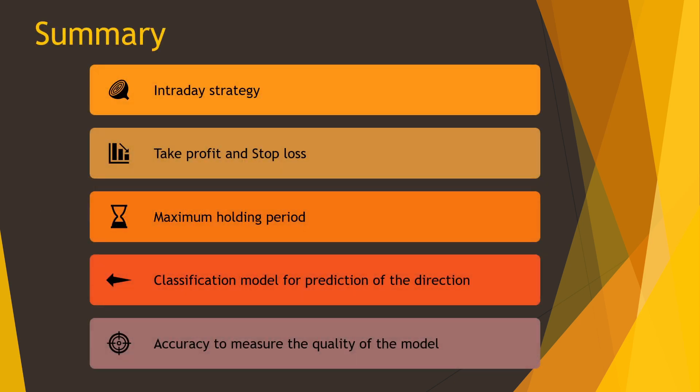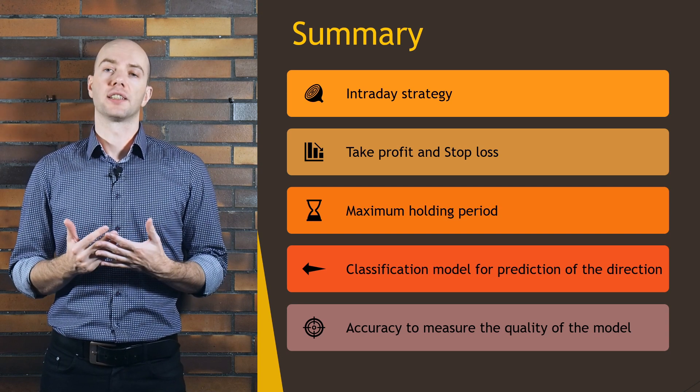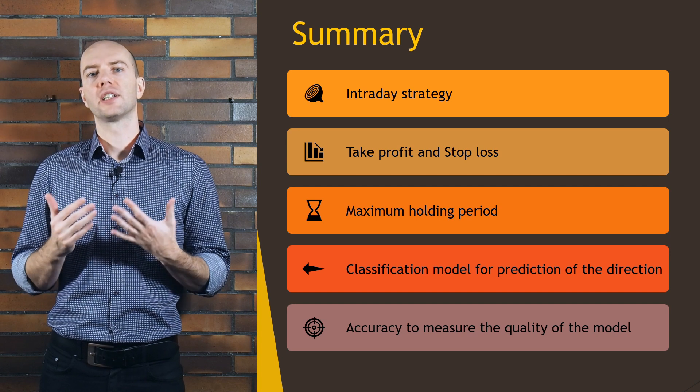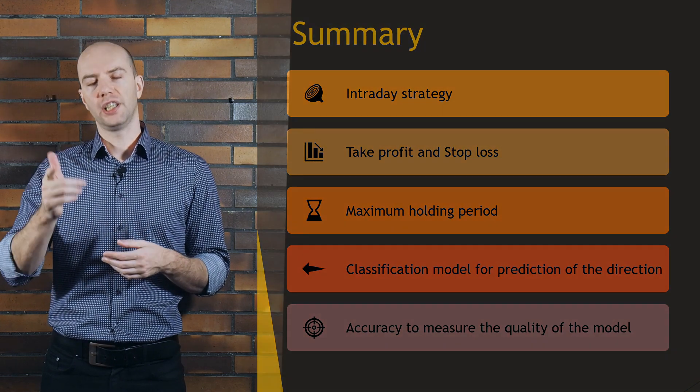Let's summarize it. It should be an intraday strategy. For closing a position, we will use take profit, stop loss, and a maximum holding period. To open the position, we need to train a classification model which will predict the direction of the future price — up, down, or flat. For a start, we will use accuracy to measure the quality of our model. This is all for today. We have defined our goals, targets, and metrics. In the next episode, we will have a look at our data — we will prepare a dataset and labels for further work. Don't miss it! See ya, bye!